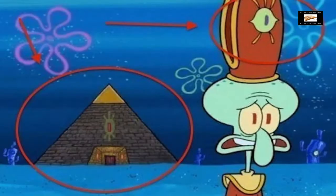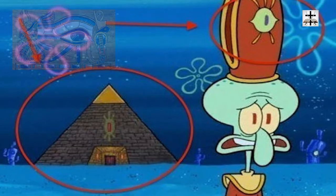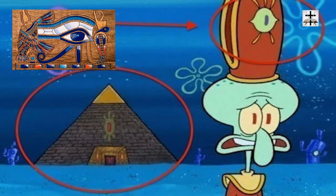Here's the next example — I showed this in my SpongeBob video — where you got Squidward essentially joining a Freemasonic Illuminati lodge, where he's got the Illuminati Eye of Horus on his hat, and the Illuminati pyramid with the Eye of Horus right in the background — the all-seeing Eye of Horus of Egyptian mythology, right there open for everyone to see. When you're a kid you just think, 'Oh, it's a fun little cartoon.'